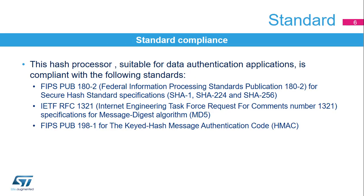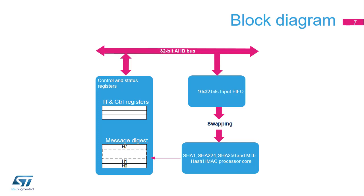The hash processor complies with the international standards for secure hash algorithms, or SHA, message digest algorithms, or MD5, and for message authentication code, or MAC. This simplified block diagram of the hash processor shows the basic data flow and control modules. The hash processor processes 512-bit data blocks and generates digests of up to 256 bits depending on the algorithm. Input data may be swapped before entering the core unit, where they will be processed to generate a simple hash or a message authentication code, or MAC.